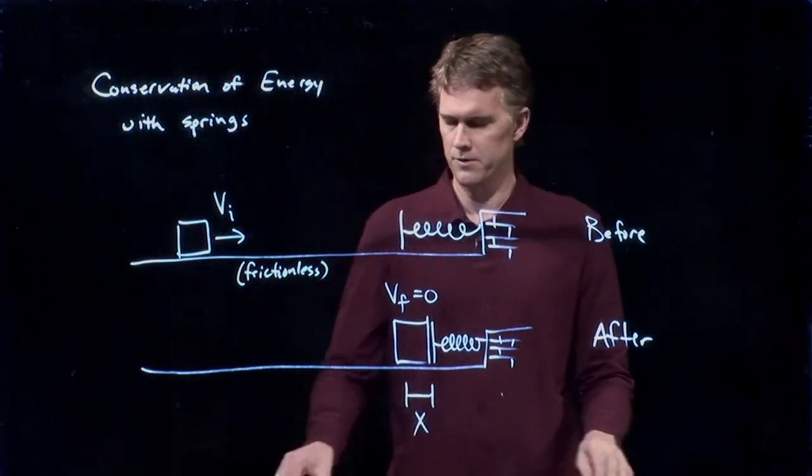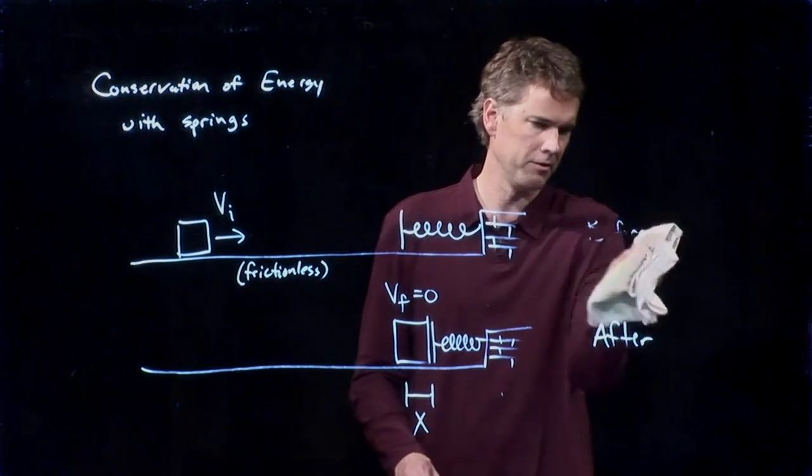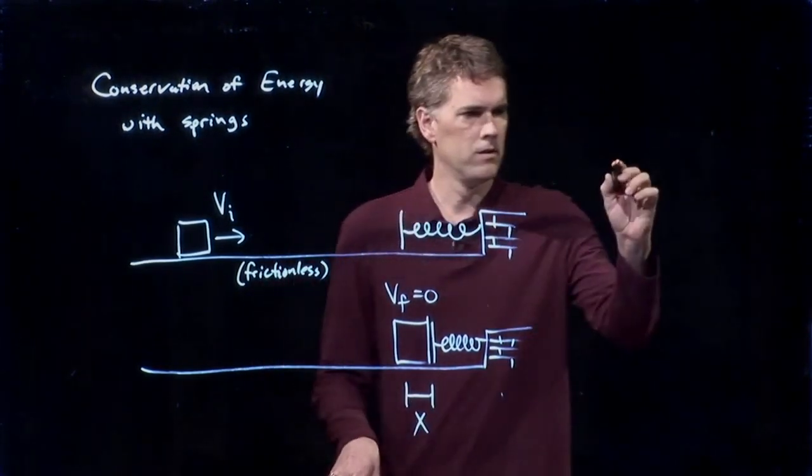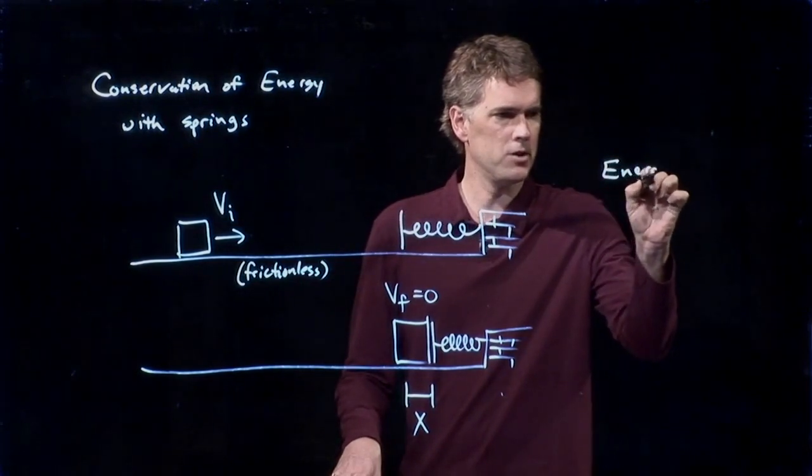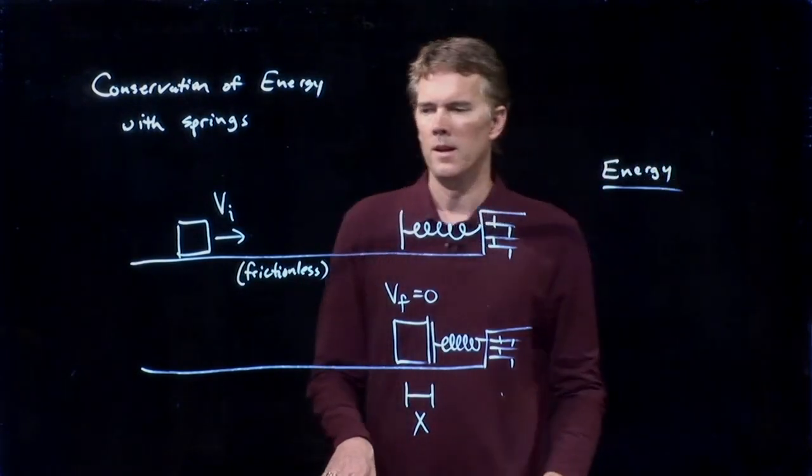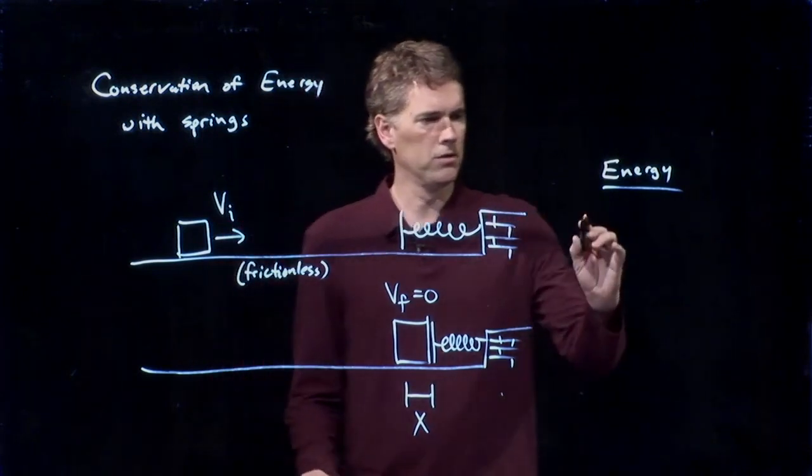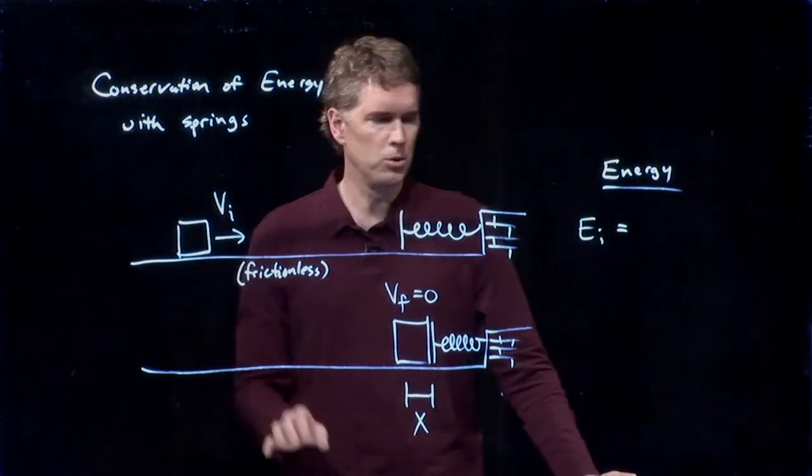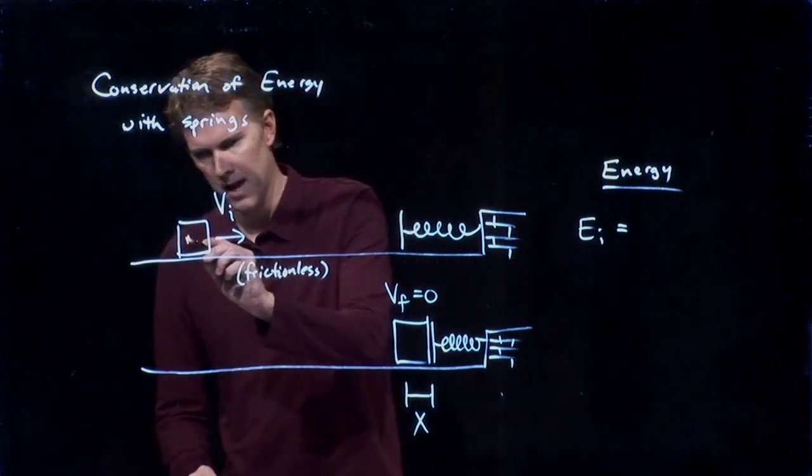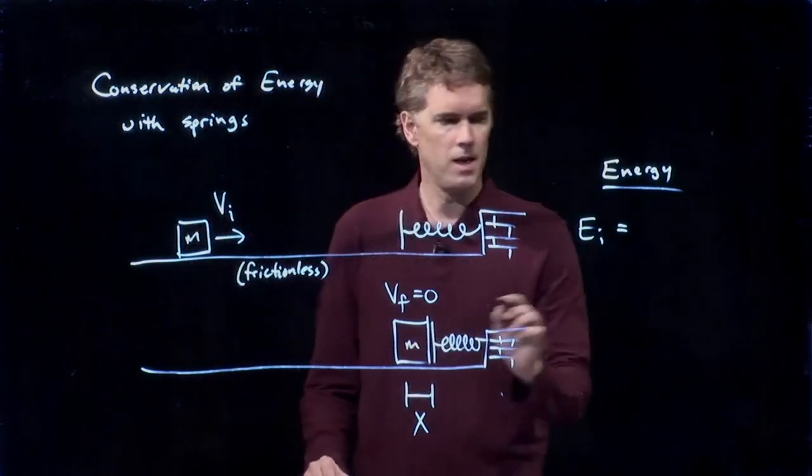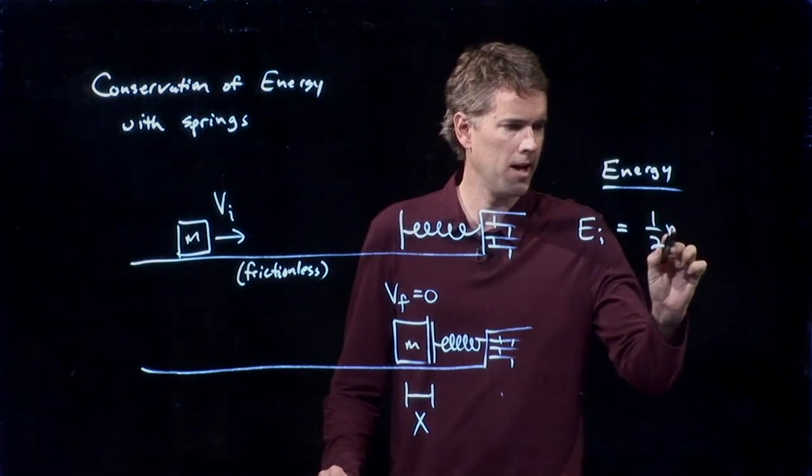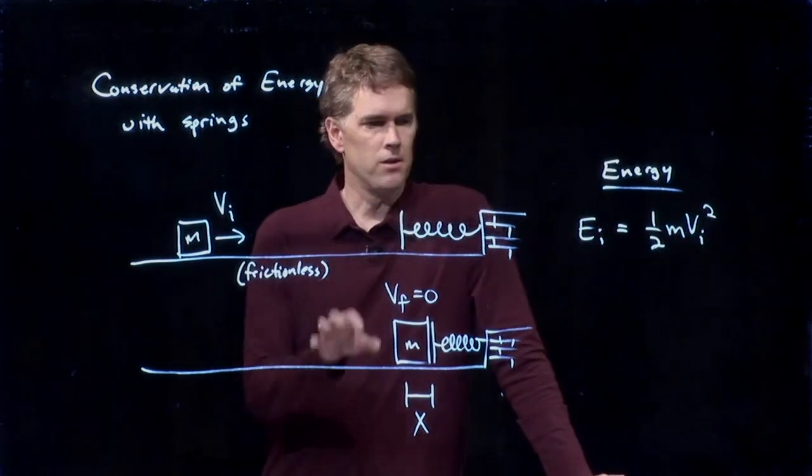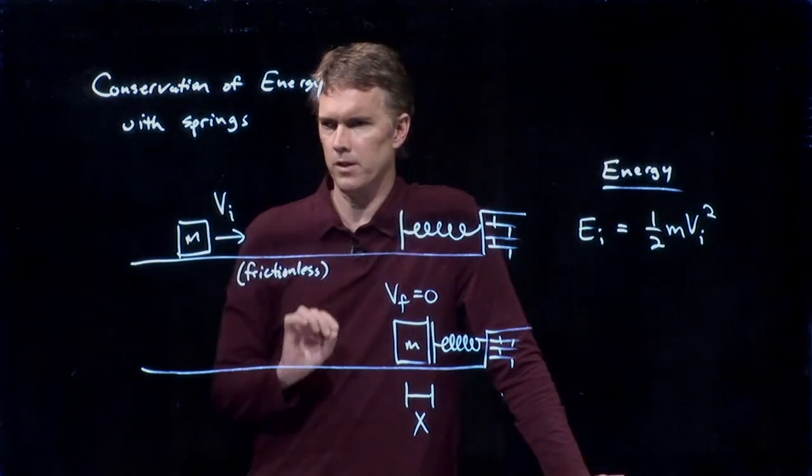Okay, let's write down conservation of energy and see if we can make some sense of it. So energy, in this initial case, there is energy in the moving block. If it's mass m, then it has energy one-half m v i squared. There's no energy anywhere else in the system.